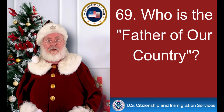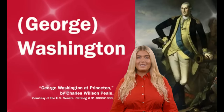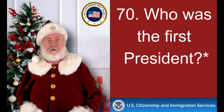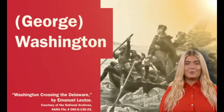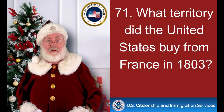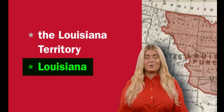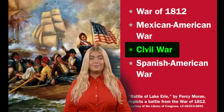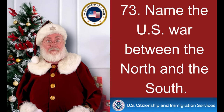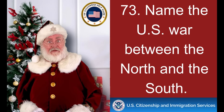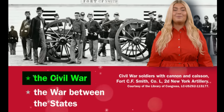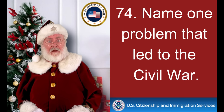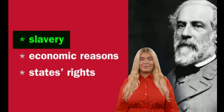Who is the father of our country? George Washington. Who was the first president? George Washington. What territory did the United States buy from France in 1803? Louisiana. Name one war fought by the United States in the 1800s. Civil War. Name the U.S. war between the North and the South. The Civil War. Name one problem that led to the Civil War. Slavery.